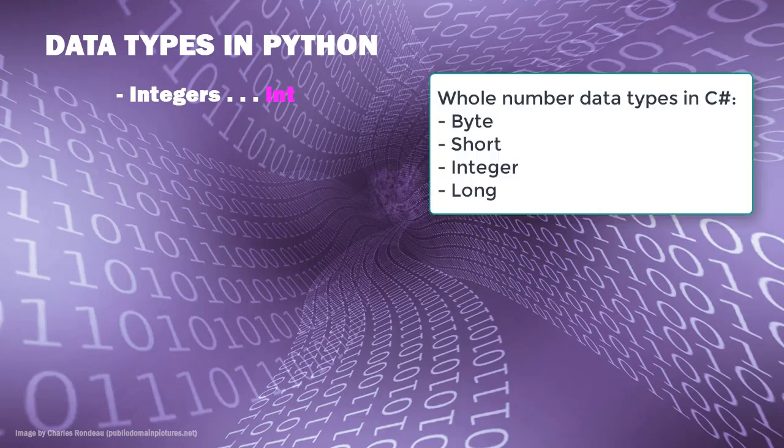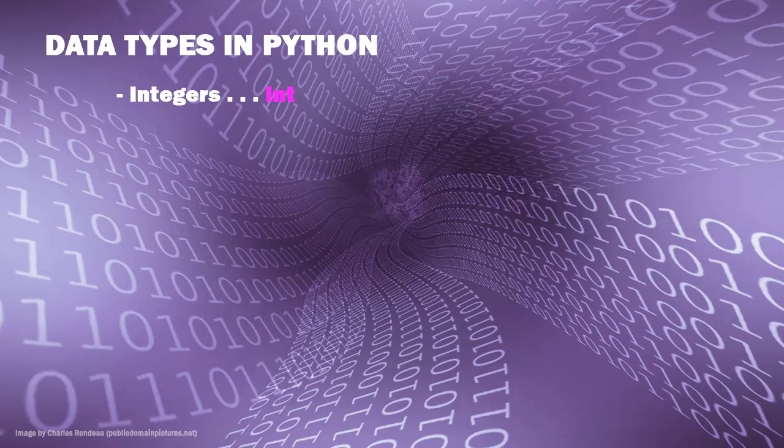So in C#, for a small number we might use a byte data type, which goes from 0 to 255. A little bit larger and we might use short, which is plus or minus roughly 32,000. An integer in C# is plus or minus a little over 2 billion. For really large numbers there's a long data type, which holds a much larger value but takes a lot more storage. In Python, an integer can basically be within any range — Python doesn't care how large an integer is, as long as there's memory to store it.